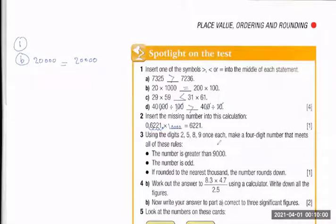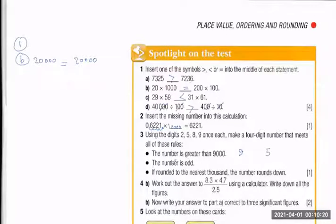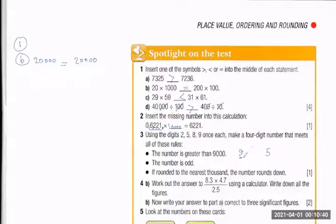Using the digits 2, 5, 8, 9 once each, make a four-digit number meeting all these rules: The number is greater than 9000, so the first digit must be 9. The number is odd, so the last digit must be 5. If rounded to the nearest thousand the number rounds down, the hundreds digit must be less than 5 — so it's 2. The answer is 9285.